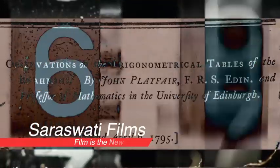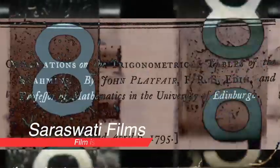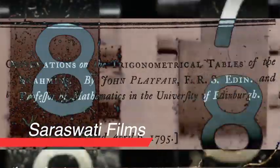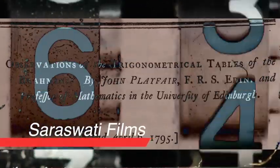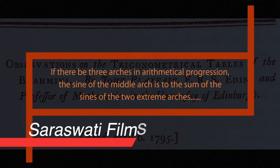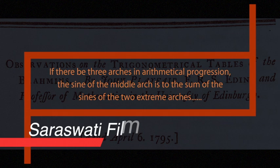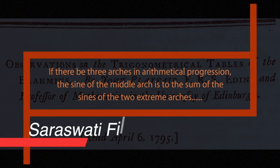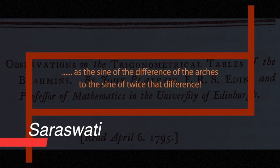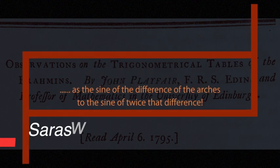In our next series of films we will deal with how Playfair came to the conclusion that Hindu astronomy and trigonometry was exceedingly old. I leave you with the theorem on which Hindu trigonometry is based, which is of course very well known today: If there be three arcs in arithmetical progression, the sine of the middle arc is to the sum of the sines of the two extreme arcs as the sine of the difference of the arcs to the sine of twice that difference.